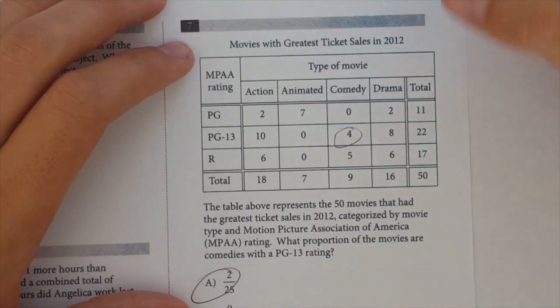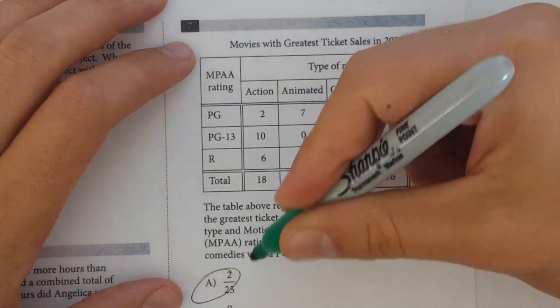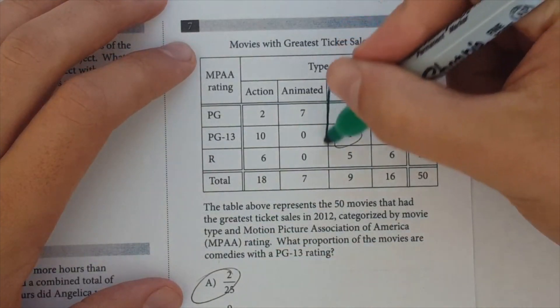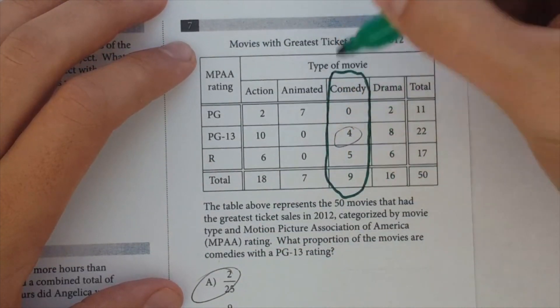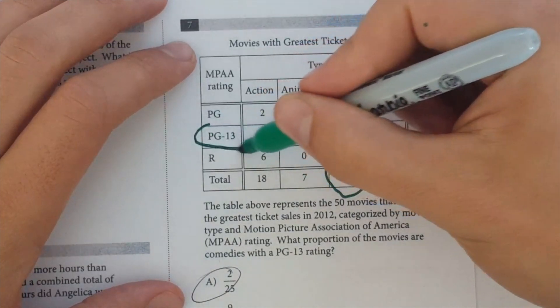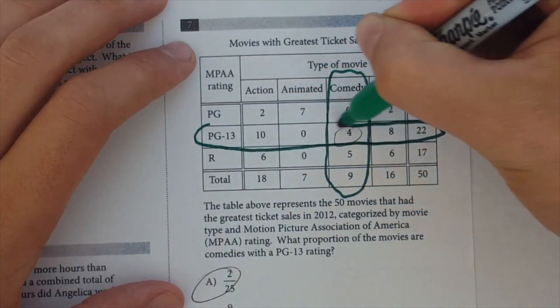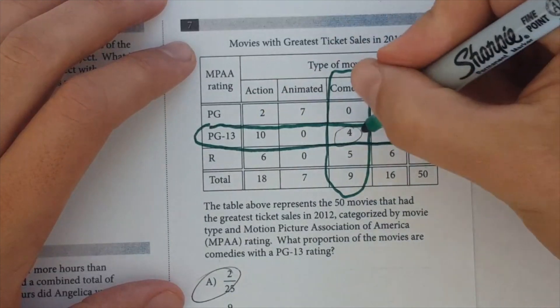What proportion of the movies are comedies with a PG-13 rating? Alright, so now let's look here. Alright, so what did it ask for? Comedies, alright, so you're in this column, and a PG-13 rating, so you're in this row. Alright, and you have 4.